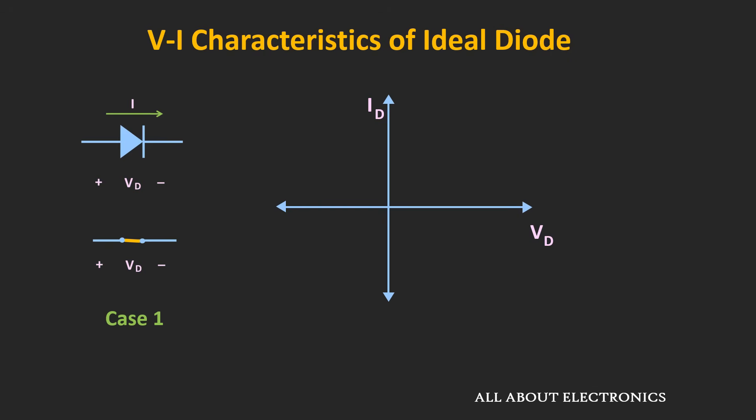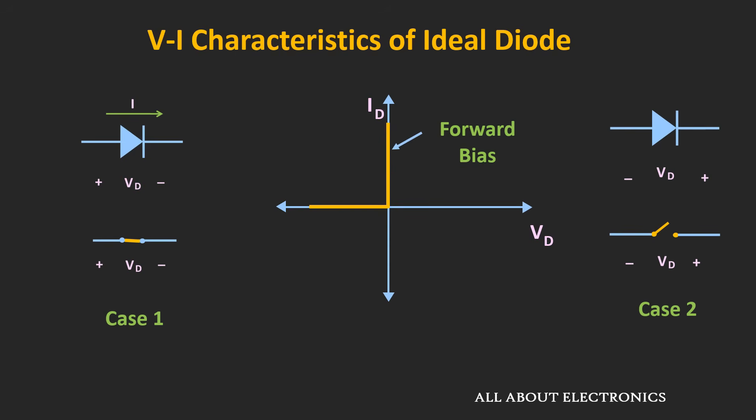Looking at the VI characteristic for the ideal diode: when the applied voltage is positive (Case 1), we get a vertical line on the VI characteristic; when the applied voltage is negative (Case 2), we get a horizontal line in the negative x-direction. Whenever the positive voltage is applied, we say the diode has been forward biased and it allows current flow. Whenever negative voltage is applied, it will not allow current flow — we say it has been reverse biased. We will talk more about forward and reverse bias later in the video.